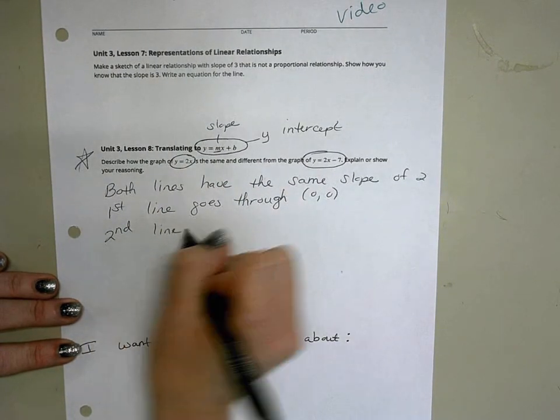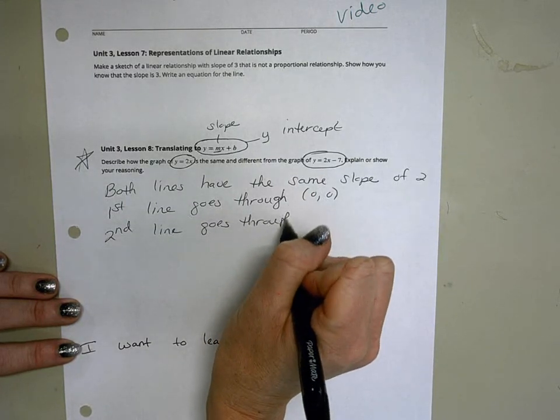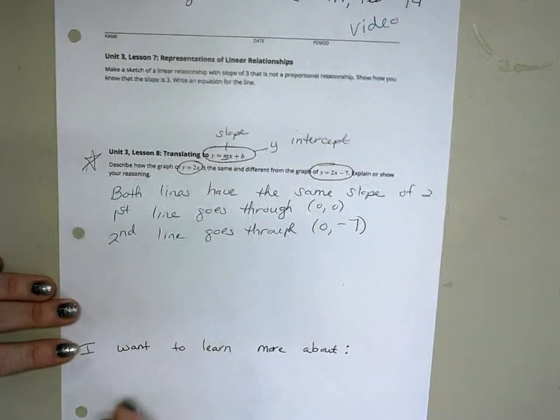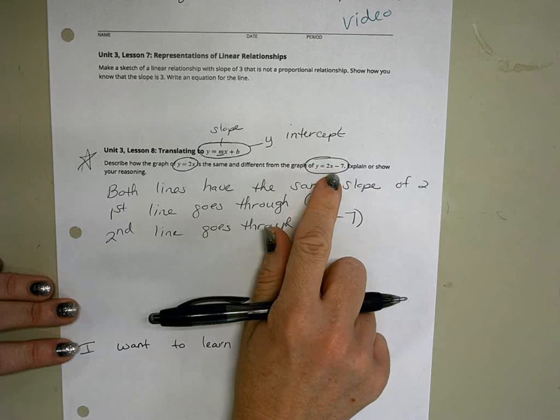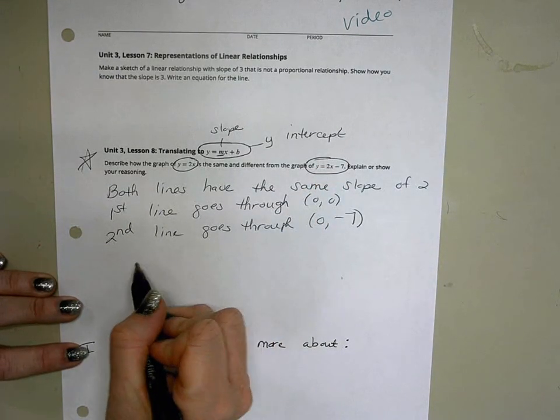The second line is going to go through the point zero, negative seven because of this 2x minus seven. We talked about that today too - is that a minus or a negative? Yes, they mean the same thing. If I was going to sketch that...